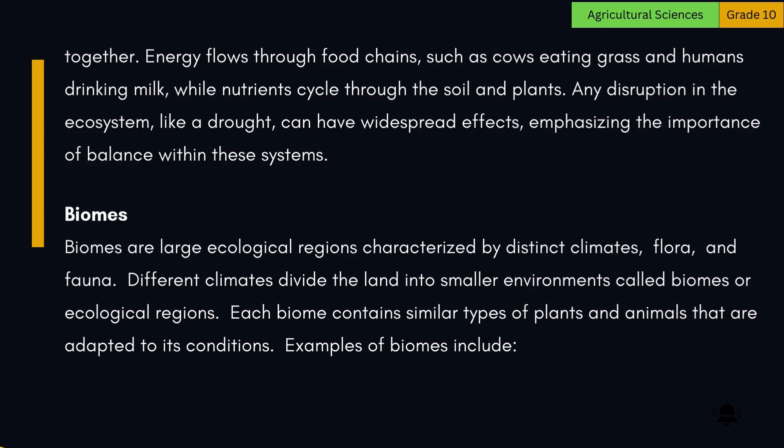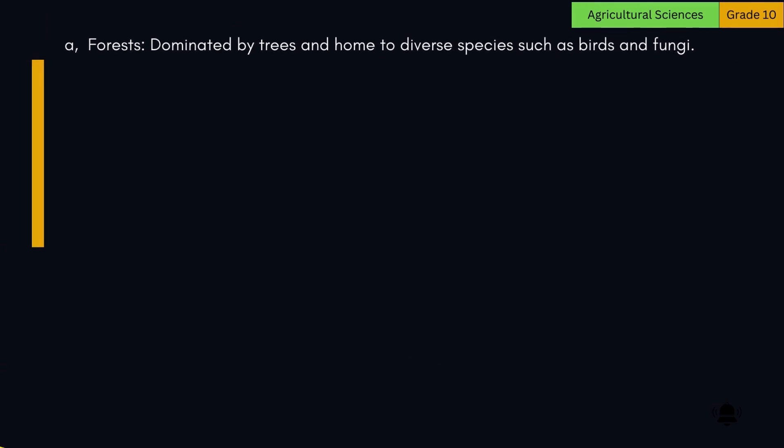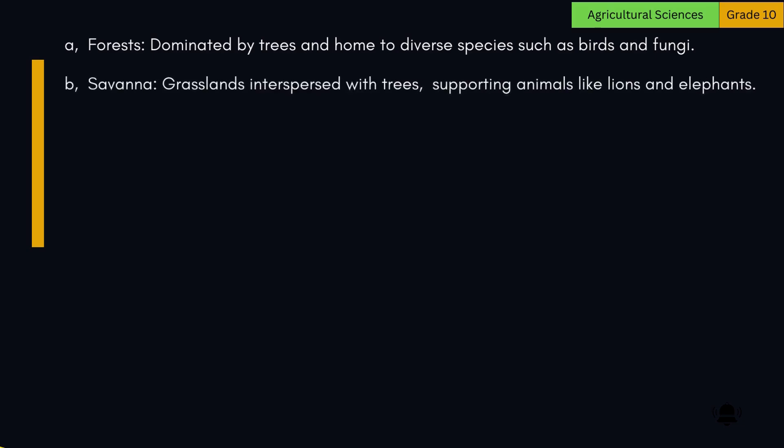Biomes are large ecological regions characterized by distinct climates, flora, and fauna. Different climates divide the land into smaller environments called biomes or ecological regions, and each biome contains similar types of plants and animals adapted to its conditions. Examples include: Forests, dominated by trees and home to diverse species such as birds and fungi; and Savanna, grasslands interspersed with trees, supporting animals like lions and elephants.